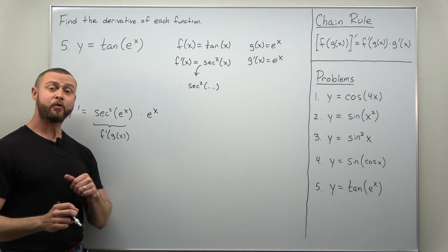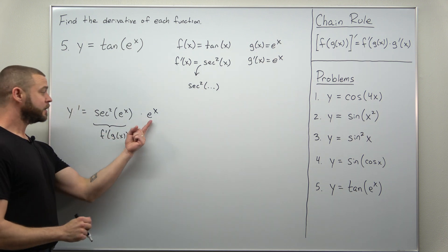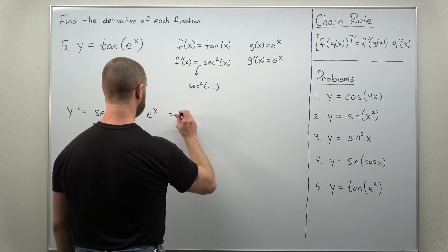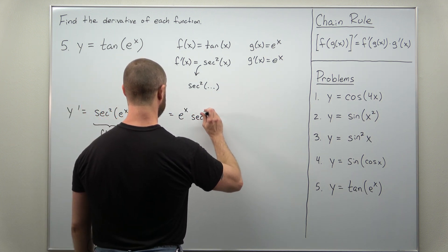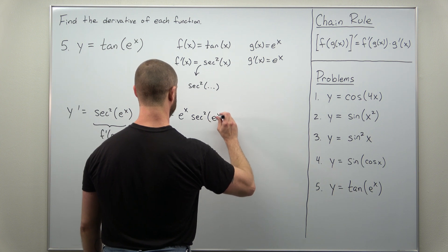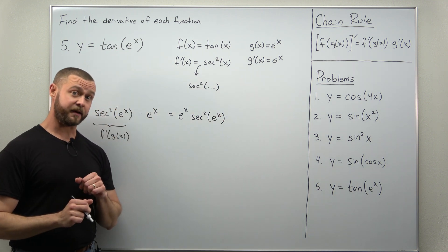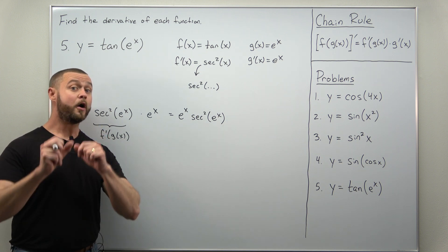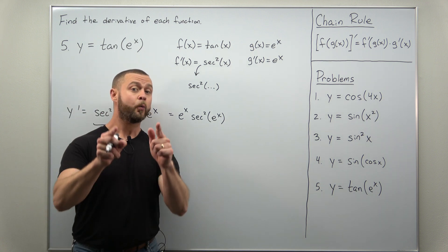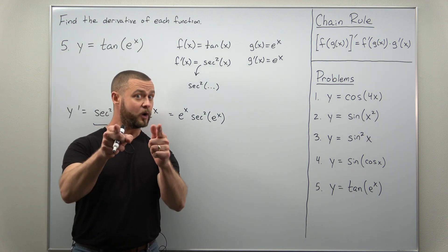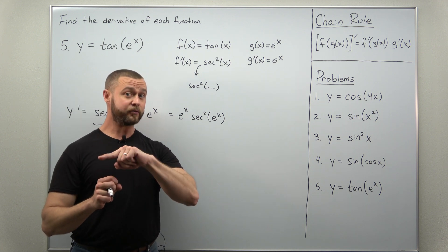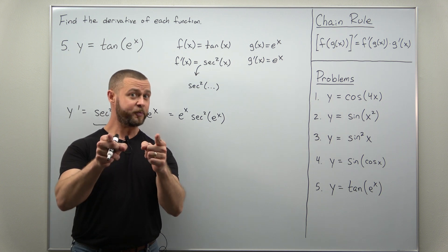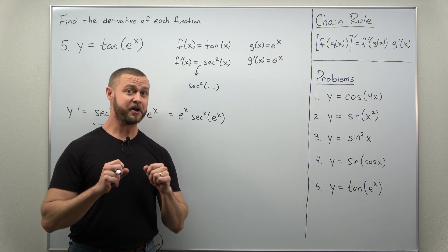And that's it. There's no single standard way to write the final answer here — you might have your factor of the exponential at the end or in front, so you could write this as e to the x times secant squared of e to the x. They both mean the same thing. These were all simple problems on applying the chain rule with trig functions. We'll have linked below ones that are more complicated, combining the chain rule with product and quotient rules with trig functions. Hope you learned a lot from this video — if you did, support the channel, like, and subscribe.